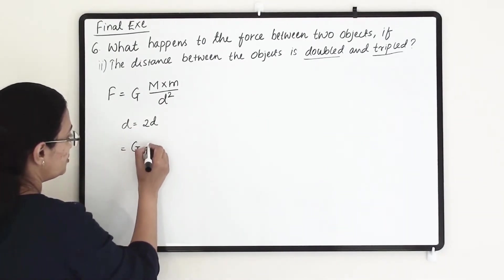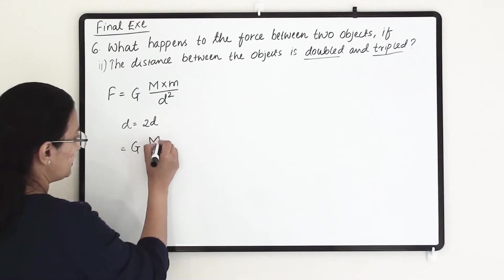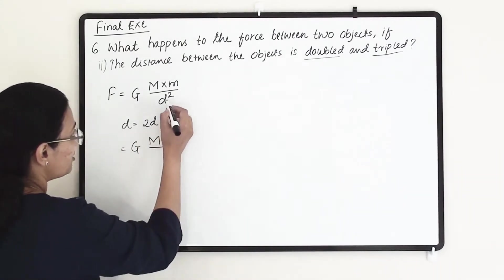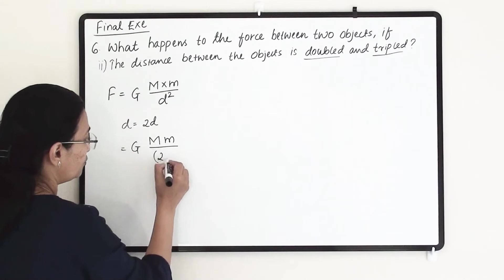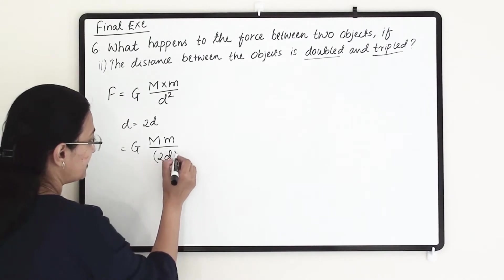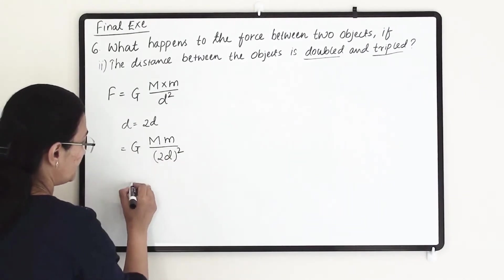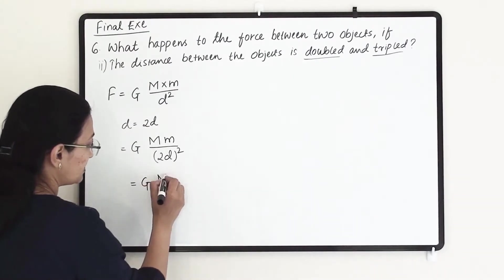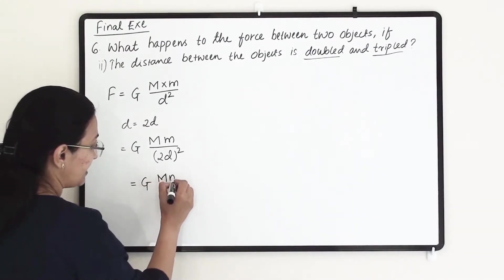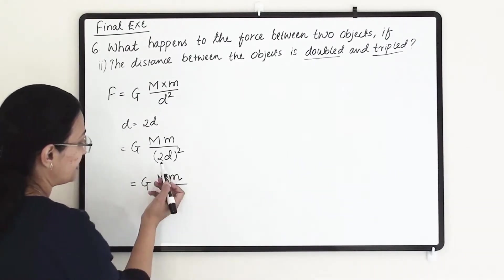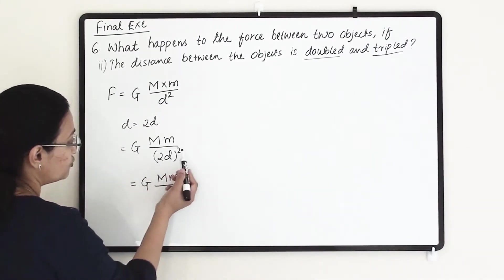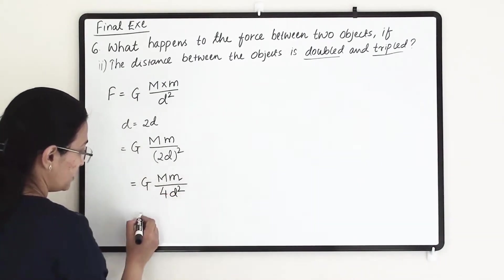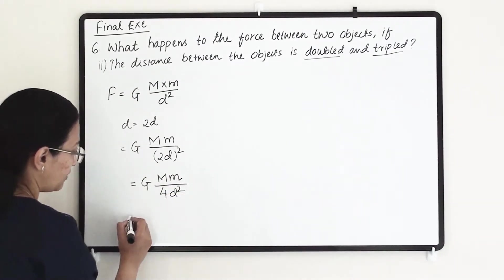Putting this into the equation, we get G times capital M times small m divided by 2d squared. Squaring the denominator gives us 2 squared, which is 4, times d square.